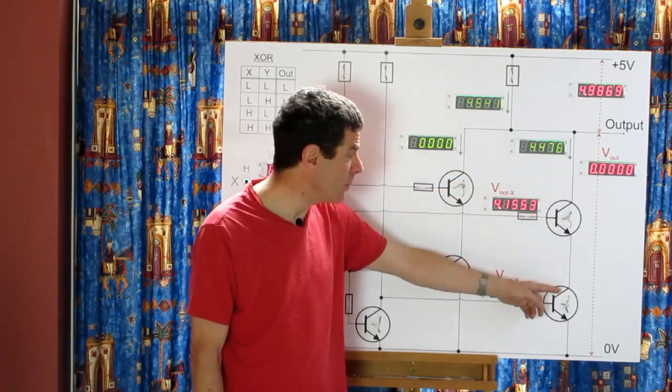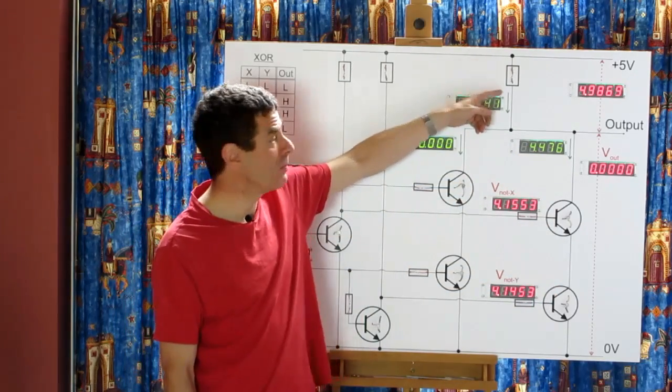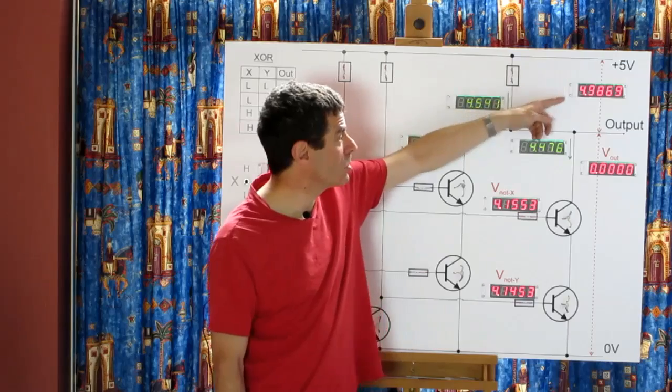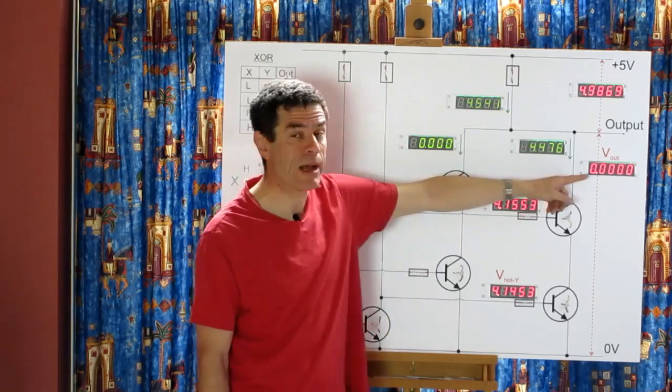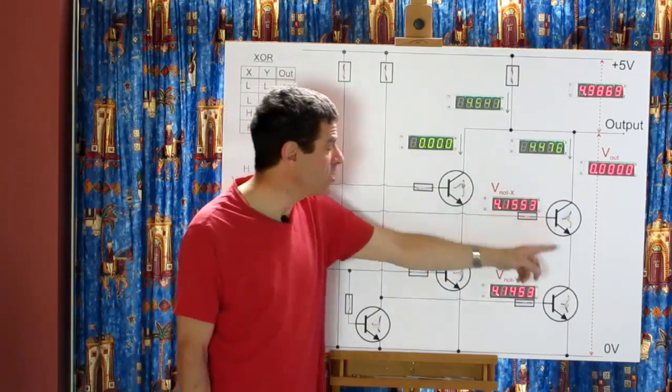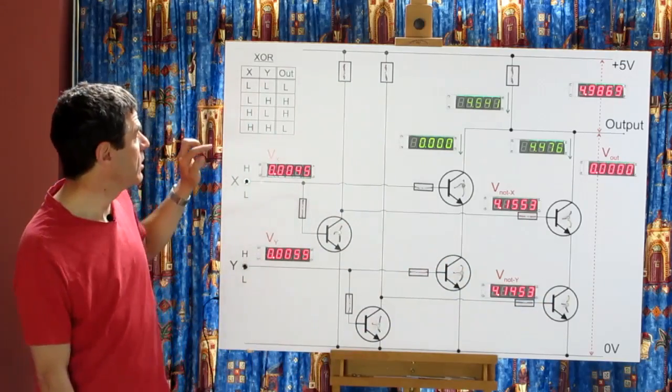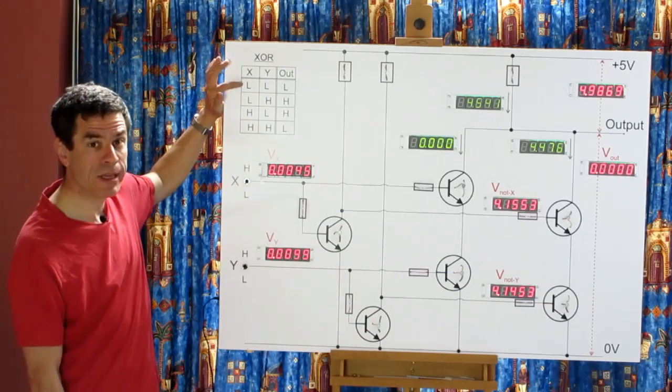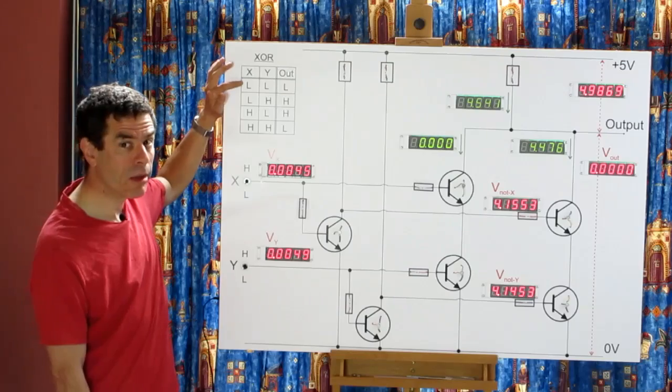When current is flowing through here, flowing through this resistor, which means you have a voltage drop across that resistor and the output is low. So this pair of transistors is recognizing this line here when both X and Y are low.